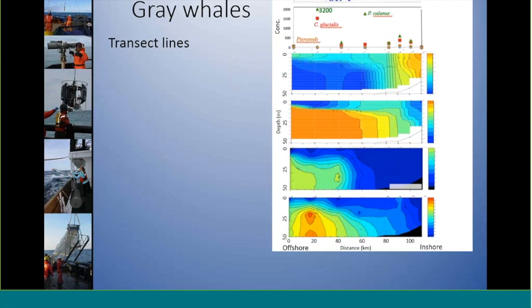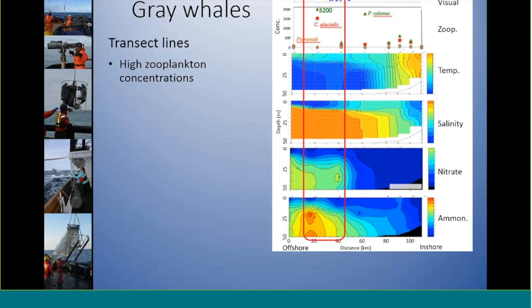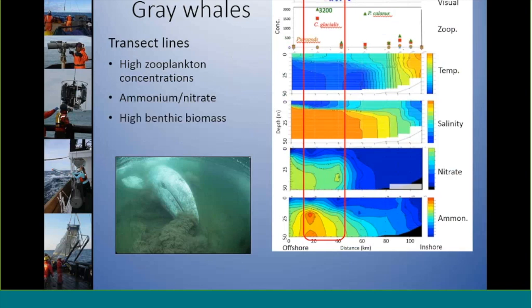Looking at the transect line data from the Point Hope line, starting at the top and working down, you've got the acoustic and visual results, the zooplankton data, temperature, salinity, nitrate, and ammonium. Gray whales were always detected in areas of very high zooplankton concentration, as well as areas of high ammonium and nitrate levels. This area along Point Hope is known for having very high benthic biomass, and gray whales are seen in extremely high numbers here every year. We have had a long-term acoustic recorder at this location since 2012, and we just recently put a microCAD at this location last year and are starting to go through those data.